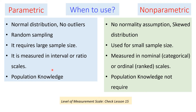Parametric tests require data measured on an interval or ratio scale, whereas non-parametric tests use nominal or categorical and ordinal or ranked scales. If the data is nominal or ordinal, we go for non-parametric tests. Additionally, parametric tests require population knowledge, whereas in non-parametric tests, population knowledge is not required. We must check these assumptions to decide which test to use.